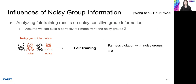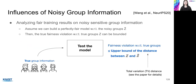This paper first assumes we can build a perfectly fair model regarding the noisy group g-tilde. The fair training is performed with the noisy information, and as a result there is no fairness violation regarding the noisy groups. The paper then shows that the true fairness violation on true group z can be bounded by an upper bound of the distance between the true group z and noisy group z-tilde, where this distance is defined as the total variation distance. Since it is hard to directly measure the distance between z and z-tilde due to lack of information on the true distribution, this paper uses a practical solution of measuring an upper bound of the total variation distance.